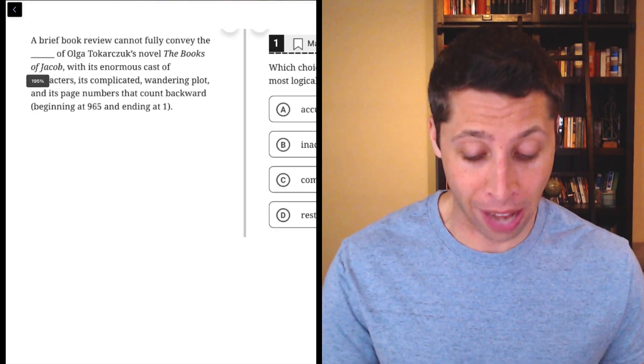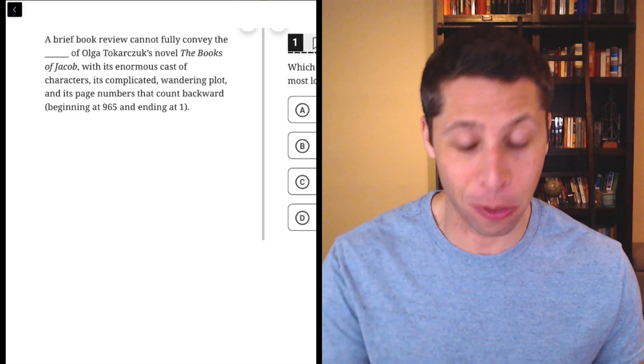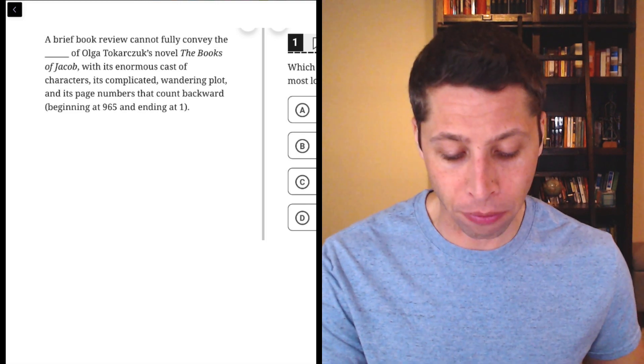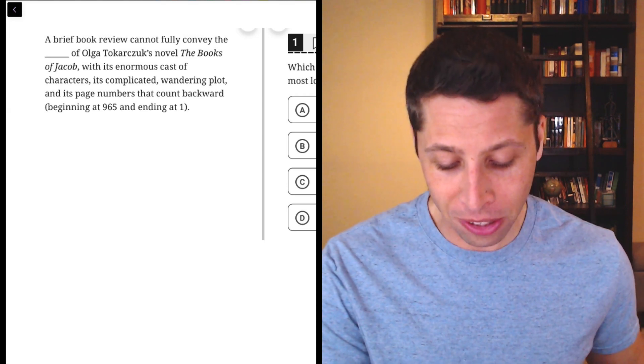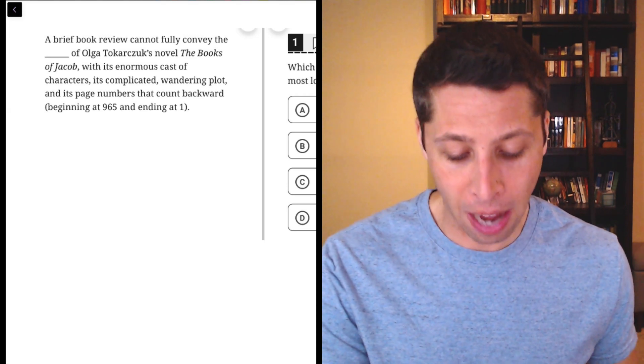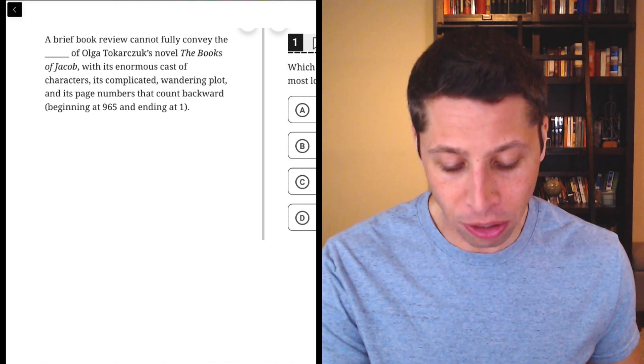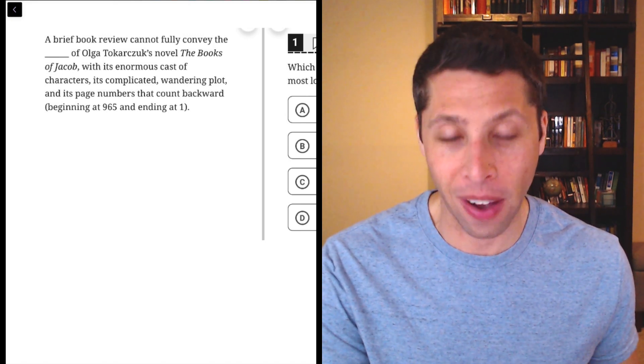So let's just go right to the passage and see if there's anything of value in here. A brief book review cannot fully convey the blank of Olga Tukarachuk's novel The Books of Jacob with its enormous cast of characters, its complicated wandering plot, and its page numbers that count backward beginning at 965 and ending at 1.